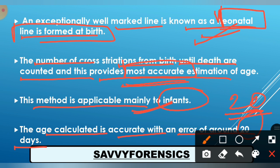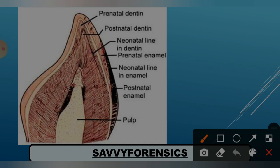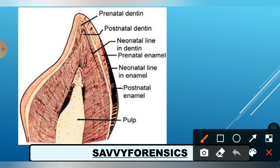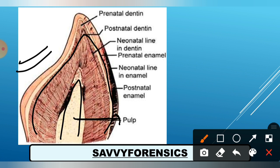Now let's try to understand this with a diagram. Here you can see a tooth. If we talk about the innermost portion of this tooth, that is the pulp. The outer portion covering the pulp is called dentine, and the covering outside the dentine is called enamel. So the innermost part is pulp, over which dentine forms a covering, and over dentine is enamel.